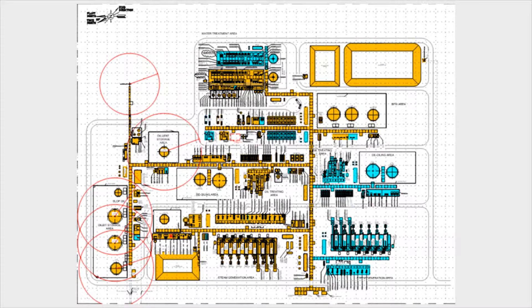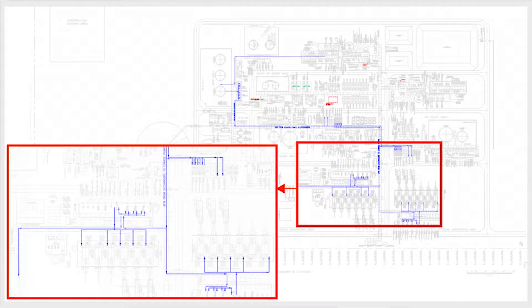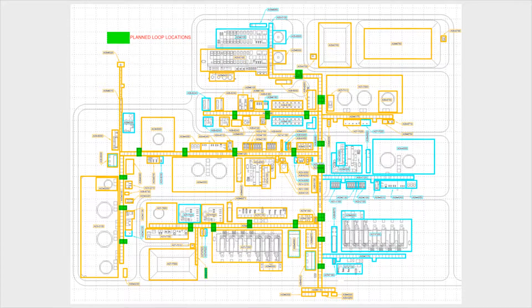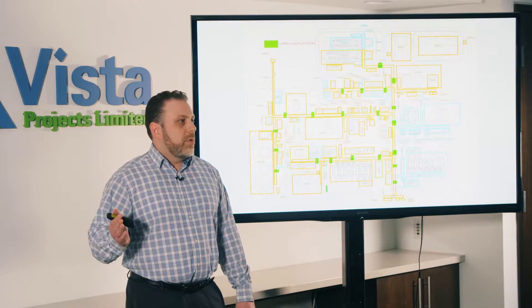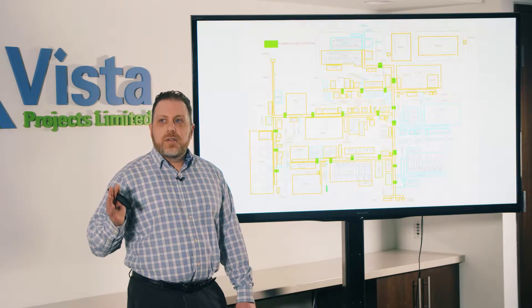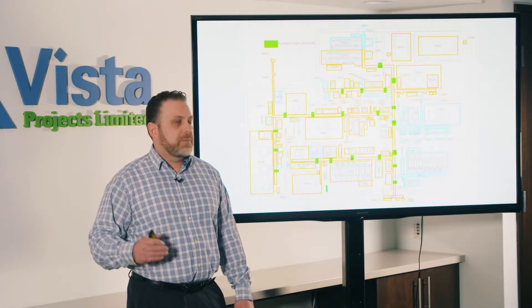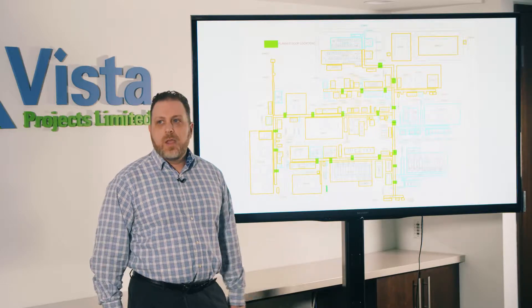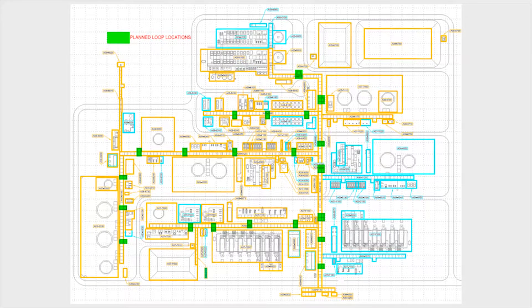We pull the information from the PFDs and develop a plot plan. From there, before we start modeling, we start running lines in a transposition. This is done to show the length of lines and it allows us to plan preliminary loop locations. This is super important in designing an efficient modularized plant, especially with our loop modules. Strategic locations are placed based on the equipment locations and they're identified in green on the plot plan.